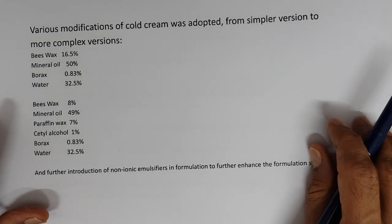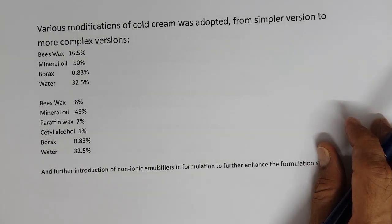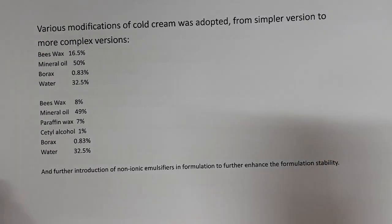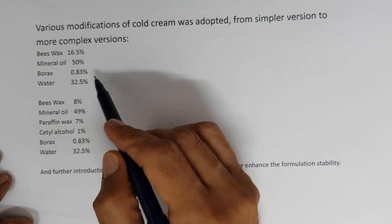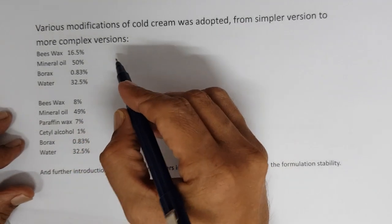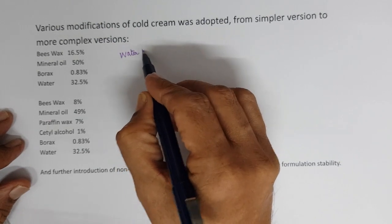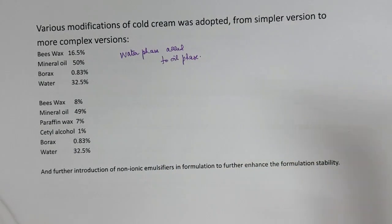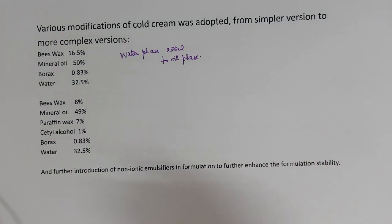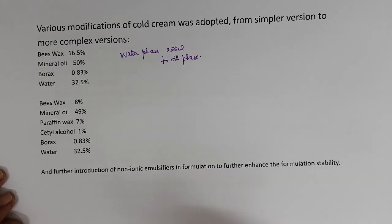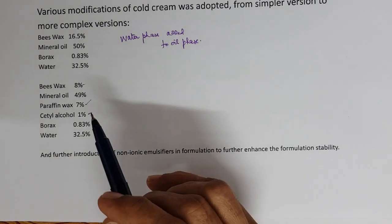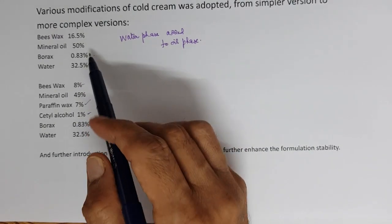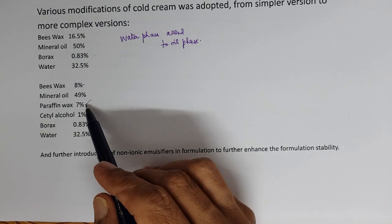Cold cream has had various modifications from a simple formula to a more complex formula. The very simple formula is: beeswax and mineral oil in the main vessel (oil phase), borax and water in the side vessel (water phase). Both phases are heated to 75–80°C, the water phase is added to the oil phase with vigorous mixing. Subsequently, some of the beeswax was substituted with paraffin wax.